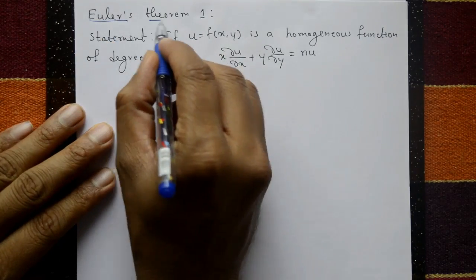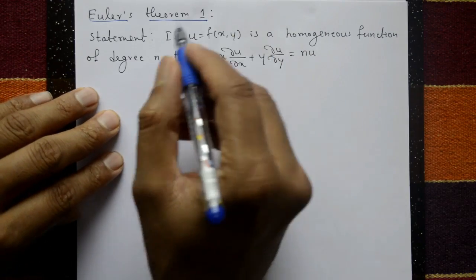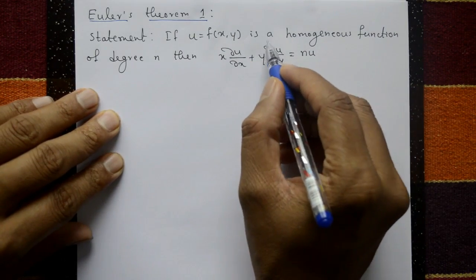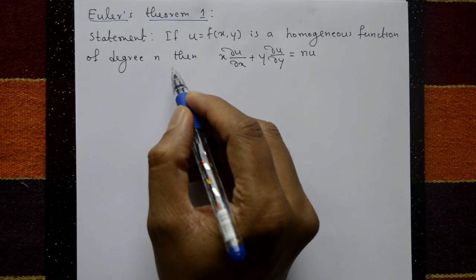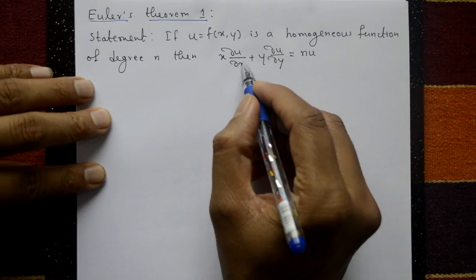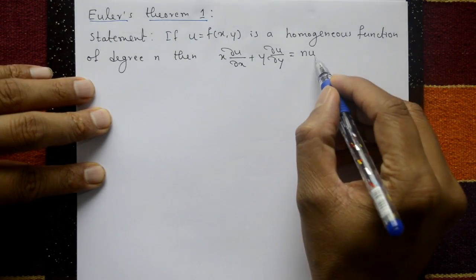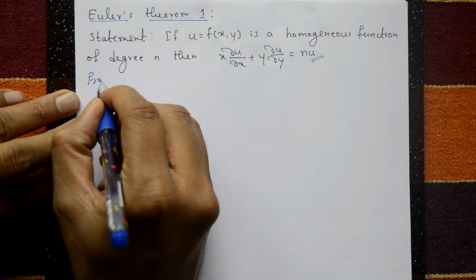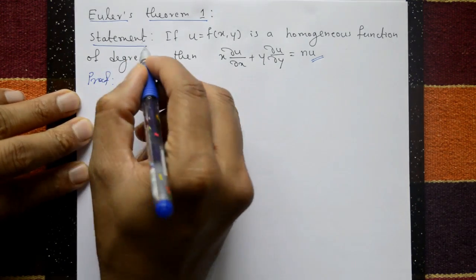Euler's Theorem — Theorem number one. Statement: if u is equal to f of x, y is a homogeneous function of degree n, then show that x·∂u/∂x + y·∂u/∂y is equal to n·u. Now proof of this statement.